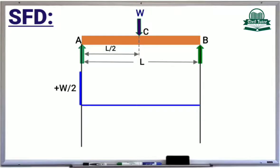Since the shear force remains constant between A and C and equal to plus W by 2, we will draw a parallel line above the baseline from A to C.